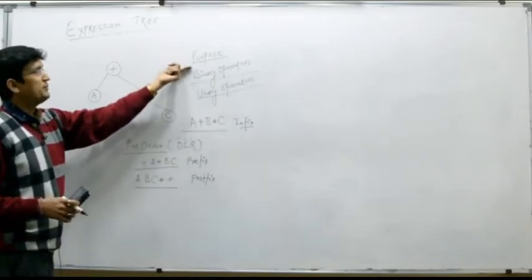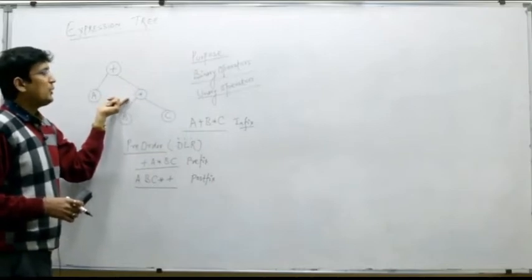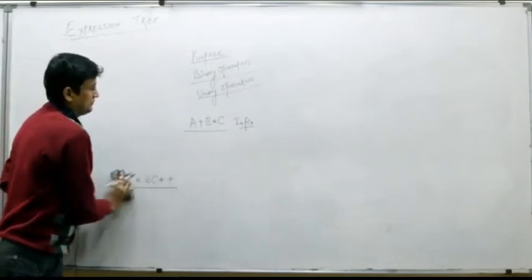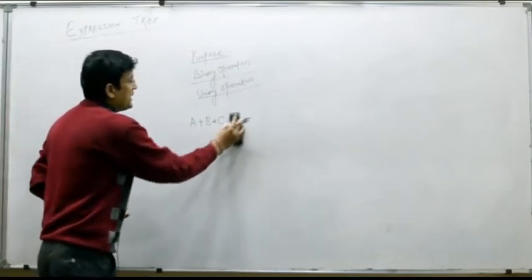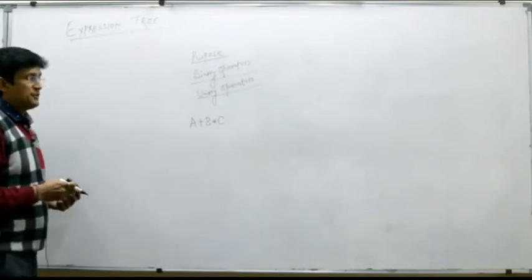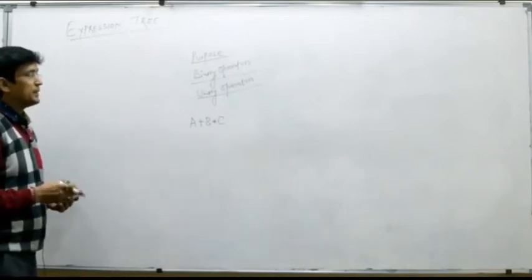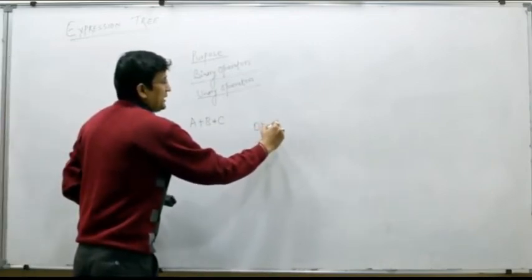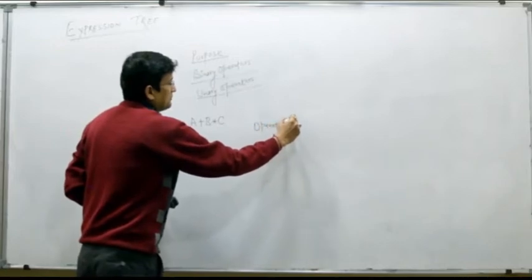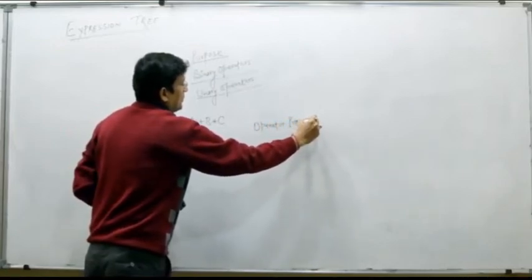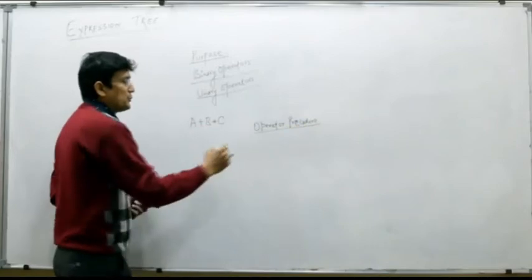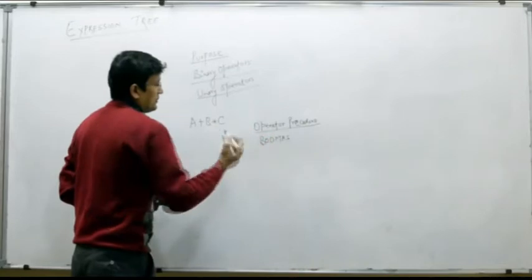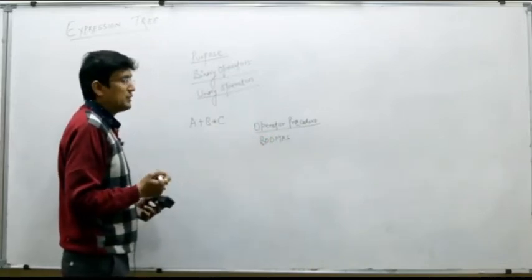We have explained the purpose of building this expression tree. Now let us understand how to build this expression tree. Suppose this is the expression A plus B multiplied with C, for which I want to build the expression tree. There are certain rules to follow, and those are the operator precedence and associativity rules. You must already have gone through the BODMAS rule for evaluation of the arithmetic expression.